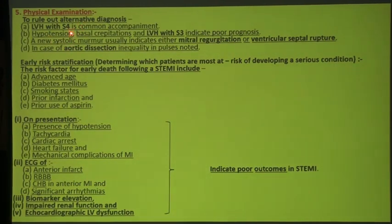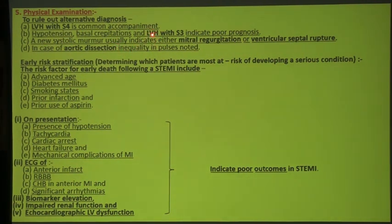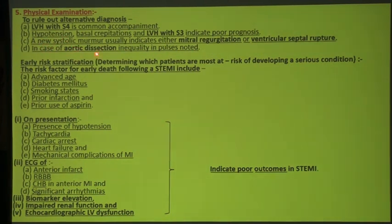Physical examination also helps to diagnose STEMI and rule out alternative diagnoses. Left ventricular hypertrophy with S4 is a common accompaniment in diastolic dysfunction — when the left ventricle is hypertrophied and rigid, you hear the pathologic S4 with hypertension. Basal crepitations and LVH with S3 indicates poor prognosis because it represents severe diastolic dysfunction of the left ventricle. A new systolic murmur usually indicates ventricular septal rupture, and in aortic dissection, inequality in pulses is noted.